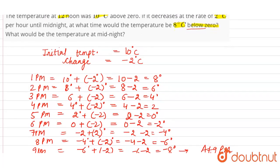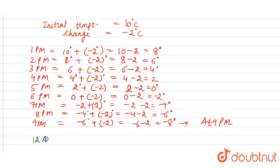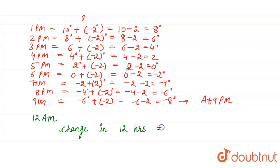In the second part of the question, it is asking what would be the temperature at midnight. Midnight means we have to find the temperature at 12 am. It will take 12 hours to go from 12 noon (12 pm) to 12 am. The change in temperature is minus 2 degrees Celsius per hour, so the change in temperature after 12 hours will be equal to 12 into minus 2 degrees, which is equal to minus 24 degrees.